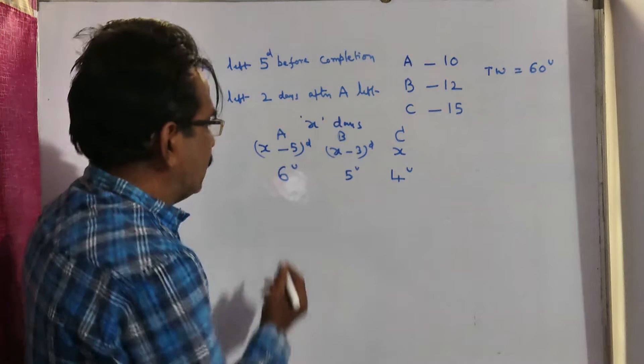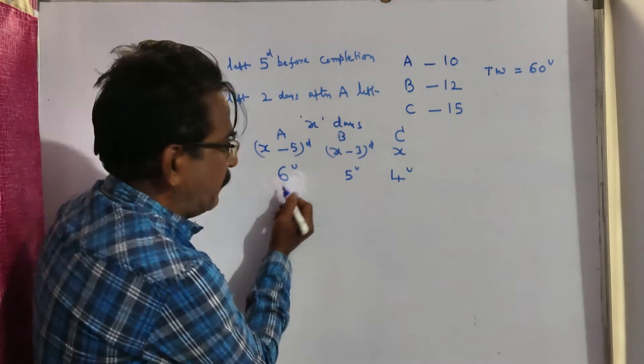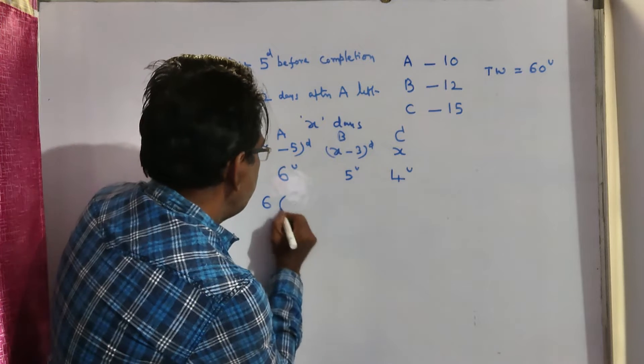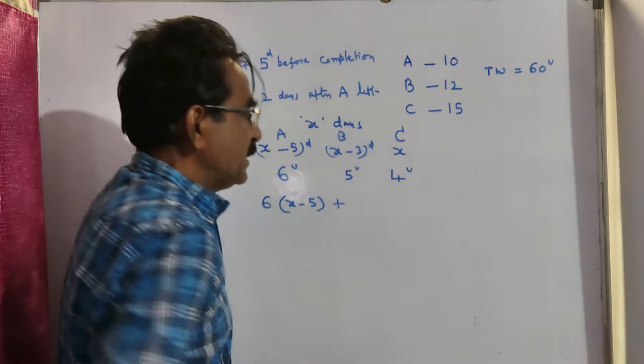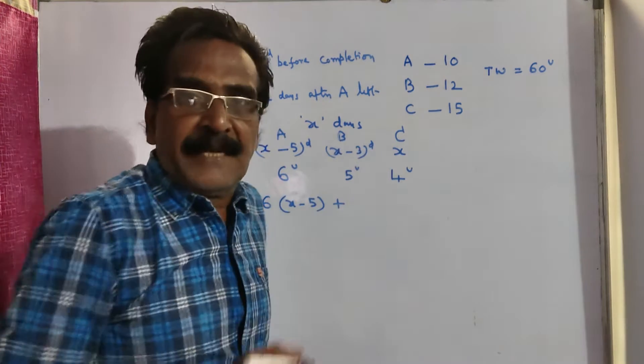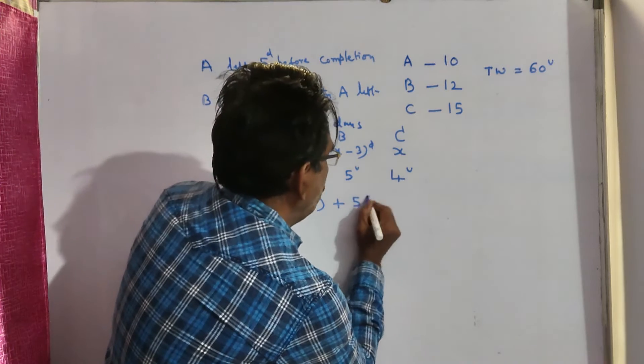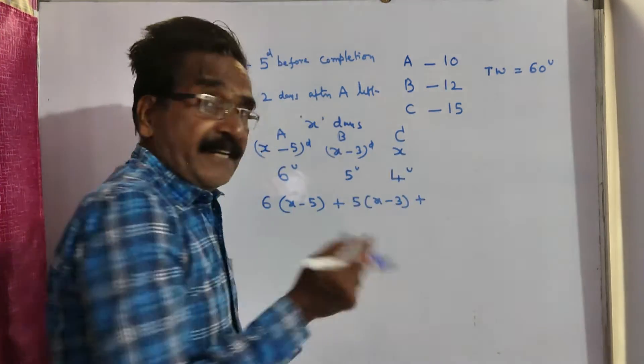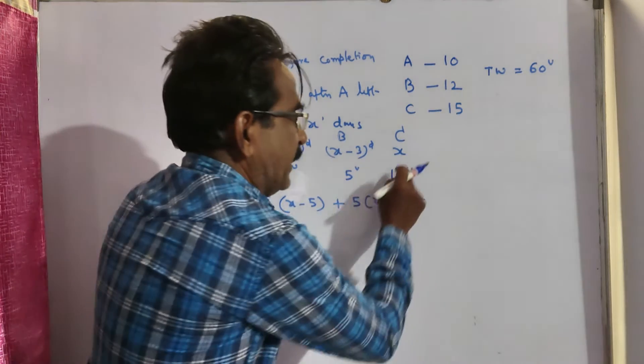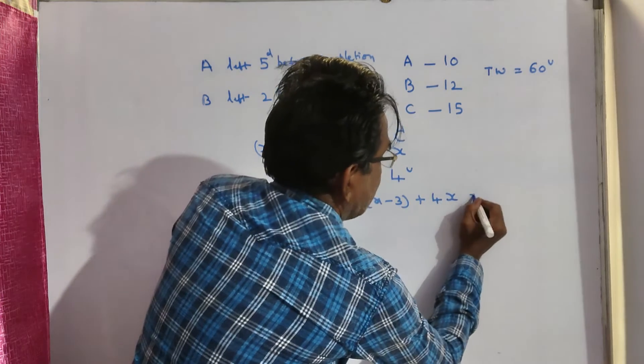So now the total work: A worked X minus 5 days at 6 units per day, so A can do 6 into X minus 5 units of work, plus B worked for X minus 3 days at 5 units per day, so 5 into X minus 3, plus C worked for X days at 4 units per day, so total work completed by C is 4X.